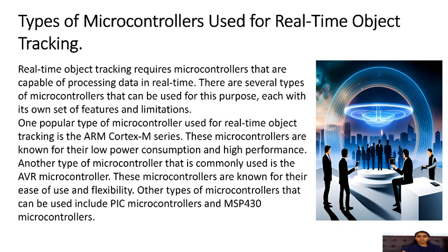Types of microcontrollers used for real-time object tracking. Real-time object tracking requires microcontrollers capable of processing data in real-time. There are several types, each with its own set of features and limitations. One popular type is the ARM Cortex-M series, known for low power consumption and high performance. Another commonly used type is the AVR microcontroller, known for ease of use and flexibility. Other types include PIC microcontrollers and MSP430 microcontrollers.